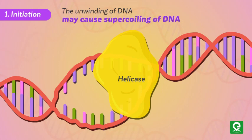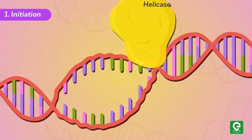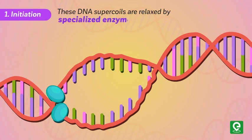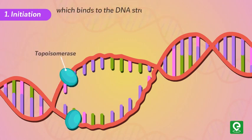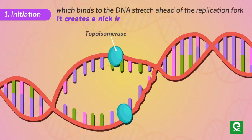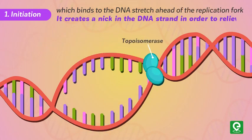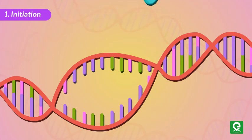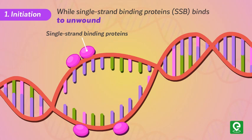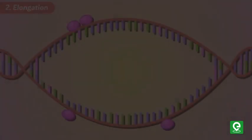The unwinding of DNA may cause super coiling. These DNA super coils are relaxed by a specialized enzyme called topoisomerase, which binds to the DNA ahead of the replication fork and creates a nick in the DNA strand to relieve the super coil. Single-strand binding proteins (SSB) bind to unwound regions and prevent them from re-annealing.